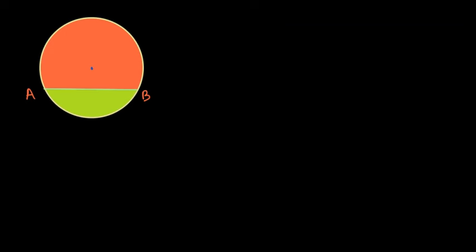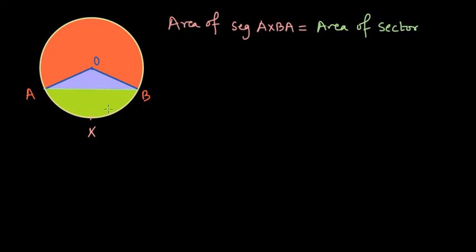First of all, let us consider this as the center of the circle. And if this center is O, we will join OA and OB. And then the area of minor segment which we can read as AXBA can be given by area of the sector OAXB minus area of triangle OAB.